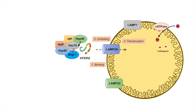This translocation process — bringing the protein cargo through the LAMP2A receptor into the lysosomal lumen — requires another protein inside the lysosome: lysosomal HSC70. Lysosomal HSC70 helps translocate the protein cargo through the LAMP2A receptor and into the lumen of the lysosome, where that protein is then degraded by cathepsins.